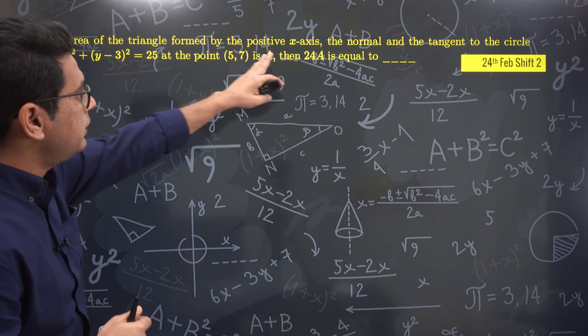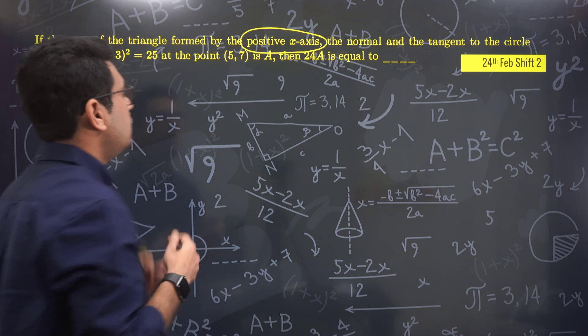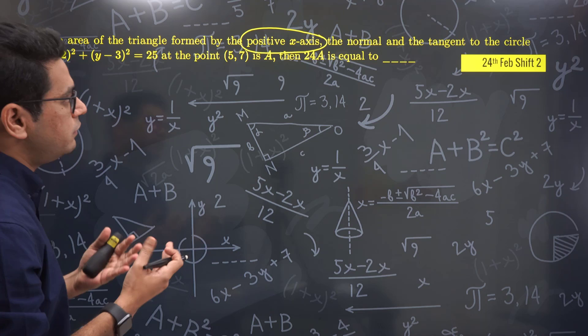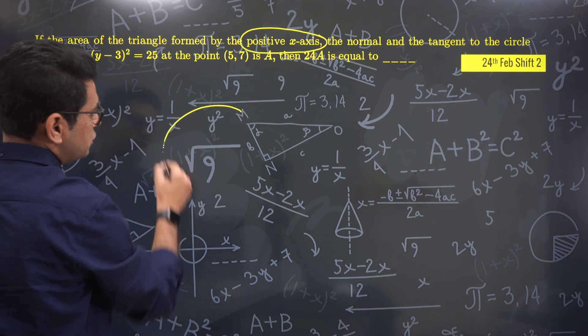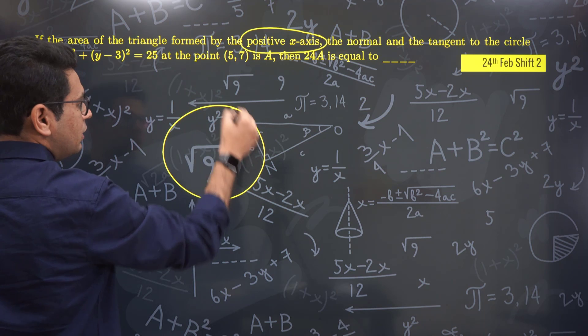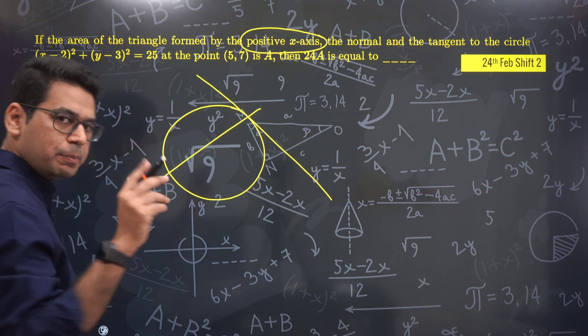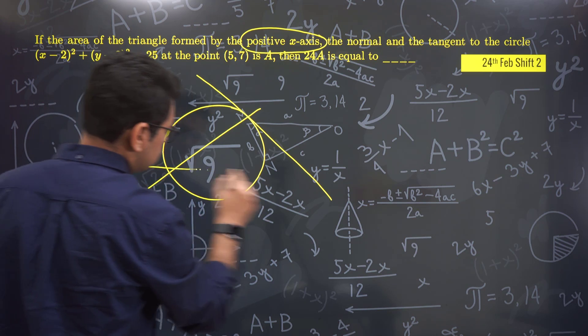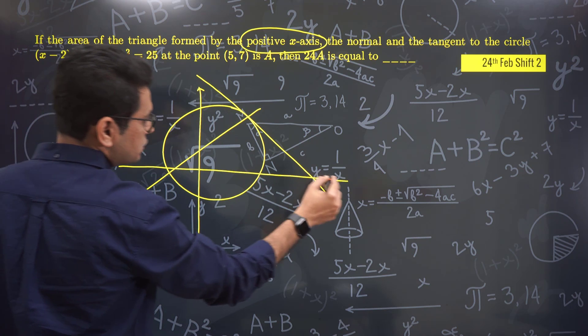It says if the area of the triangle formed by the positive x-axis - this is the problematic thing - the area of the triangle formed by positive x-axis, the normal and the tangent to the circle. The question is very easy, nothing as such. There was a circle. A tangent was drawn here, a normal was drawn here. Now where was the problem? Let's see.